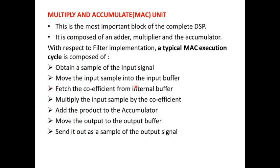We have to move the input sample into the input buffer, and then this input signal has to be multiplied with the coefficient. Hence we have to fetch the coefficient from another internal buffer, multiply the input sample by the coefficient, and the product has to be added to the accumulator.